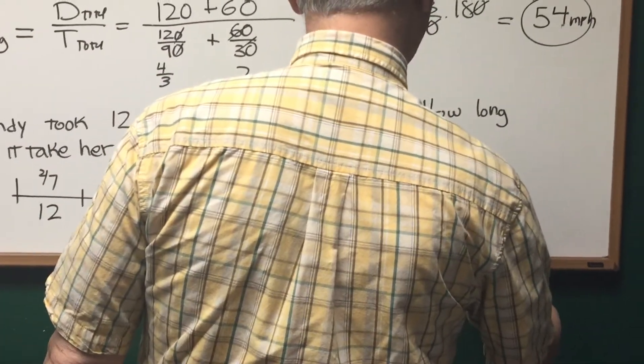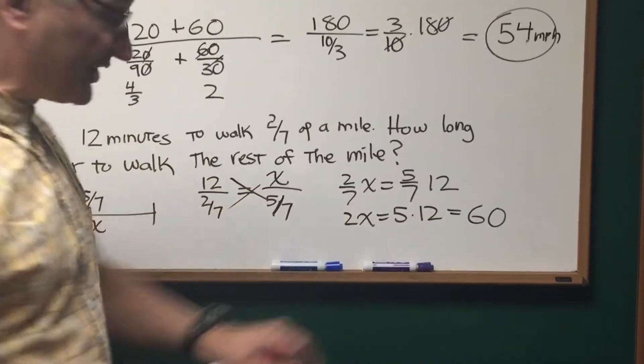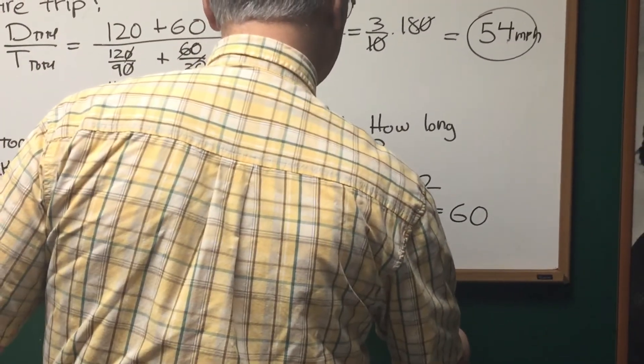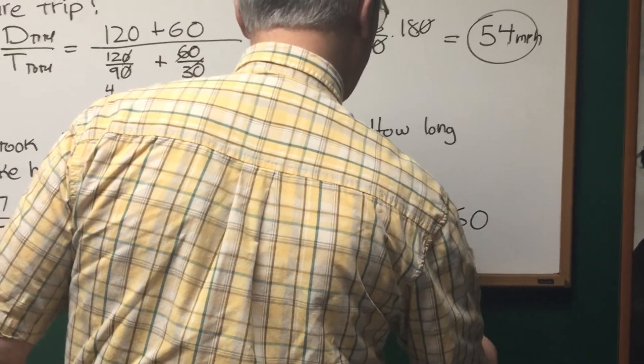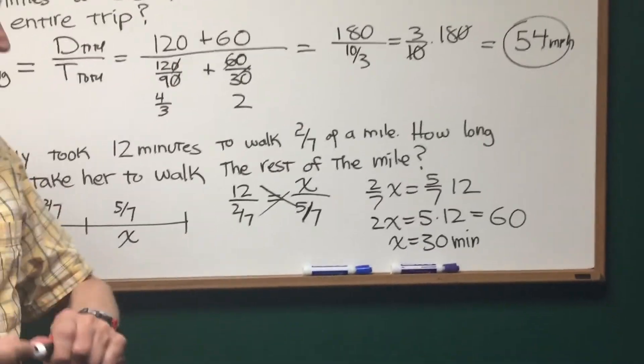is equal to 5 times 12. 5 times 12 is 60. 2x equals 60. Therefore, x is equal to 30 minutes. And that's how long it will take Zandi to walk the remainder of that mile.